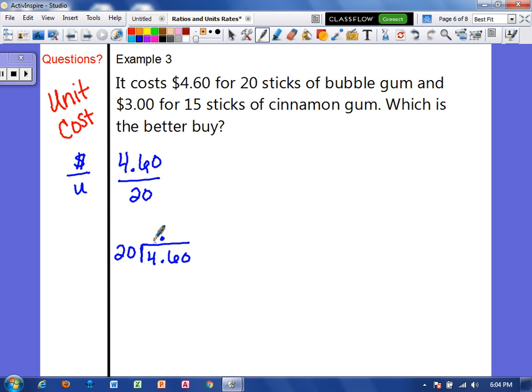This decimal goes up, 20 goes into 4 zero times, but it goes into 46 two times. We have 6 left over. And if we bring down the zero, 20 goes into 60 three times.